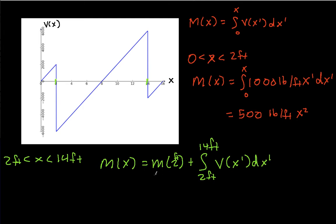So m of 2 feet, we discover is, let's see, that would be 2,000 foot pounds. V of x prime, between 2 feet and 14 feet.